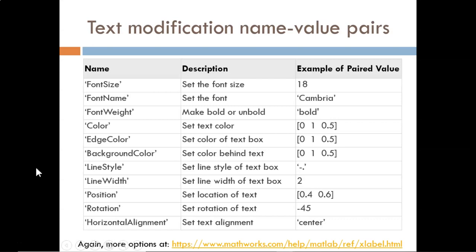We have already seen the use of a name value pair for adjusting the font size. There are dozens of other name value pairs available. An abbreviated list is shown here. Other key ones provide the ability to change the text color, set a border color around the text, adjust the rotation angle of the text, or align the text to the left, center, or right.